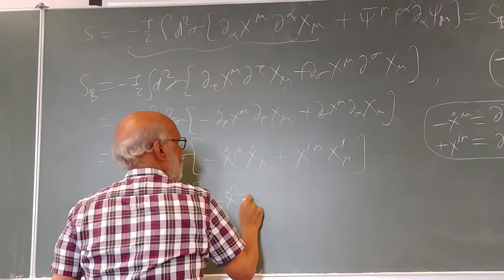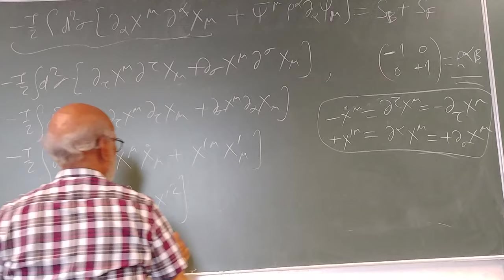We have minus x dot square plus x prime square, and this if you like you can write as plus 3 by 2.